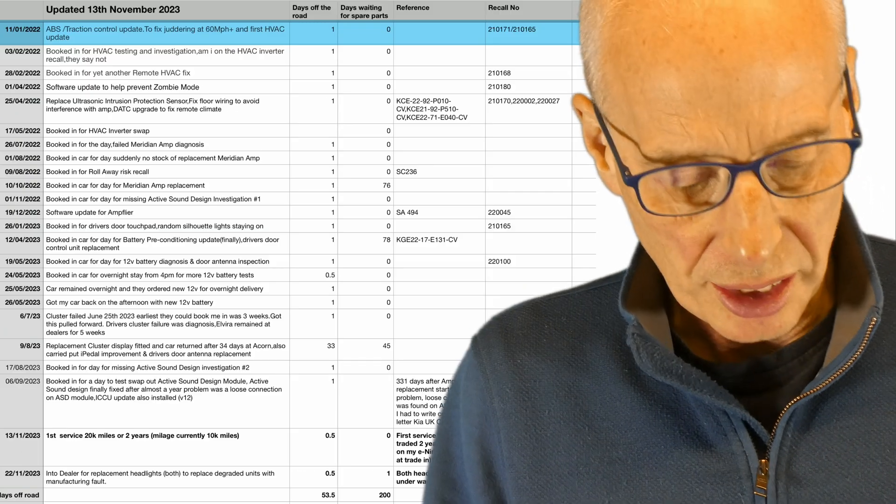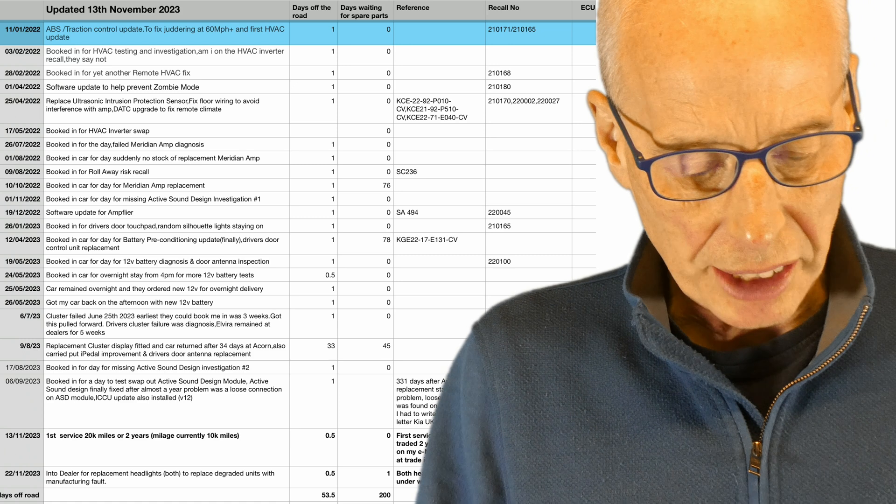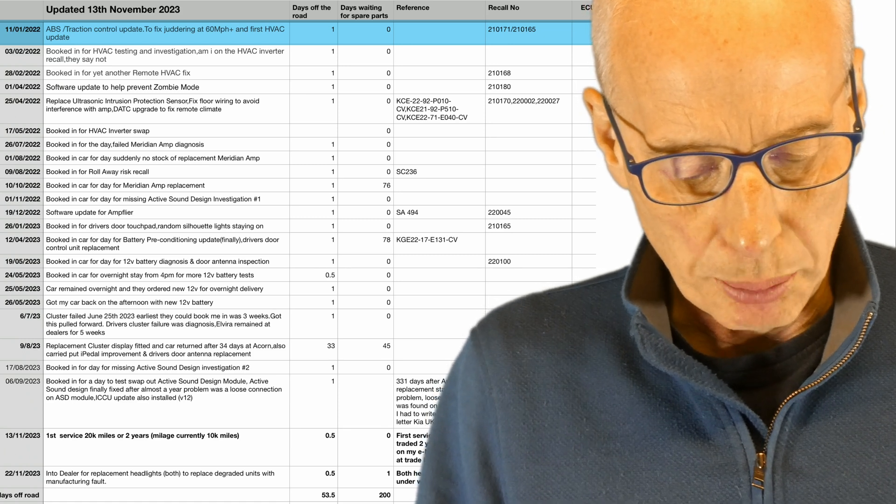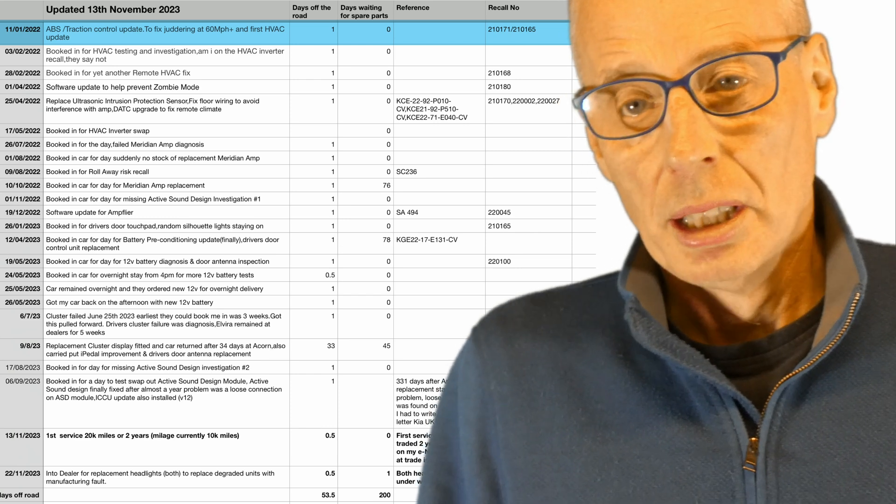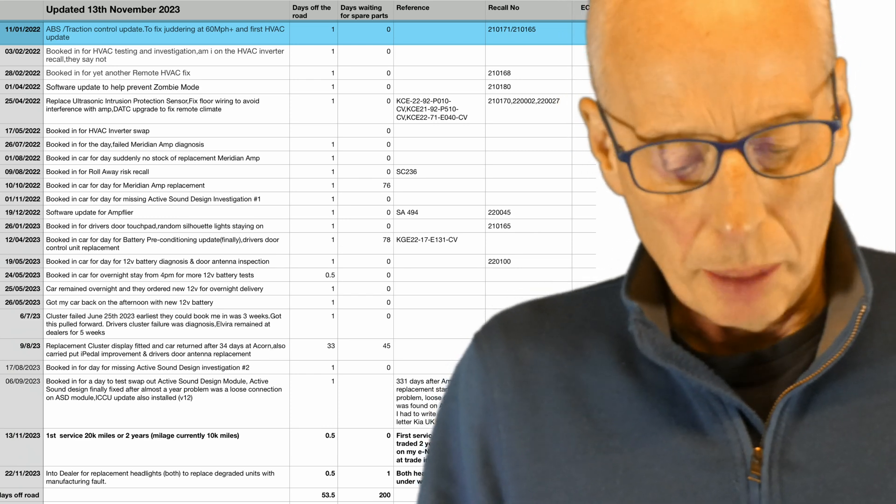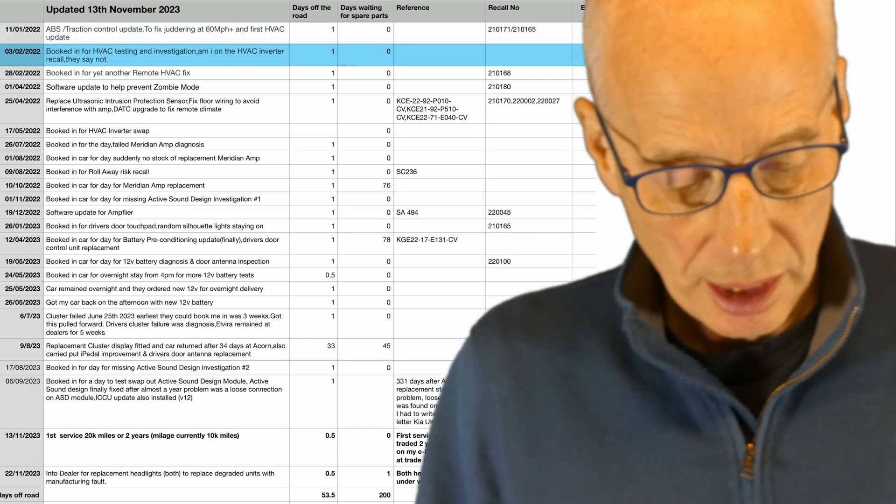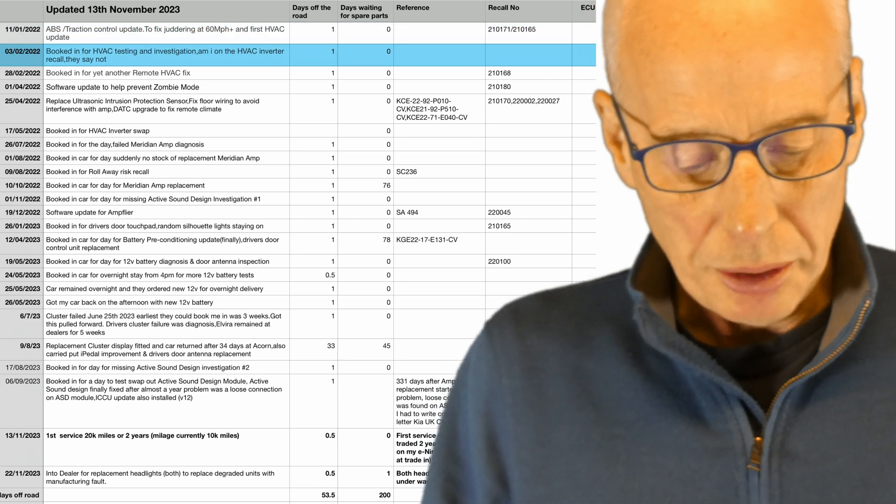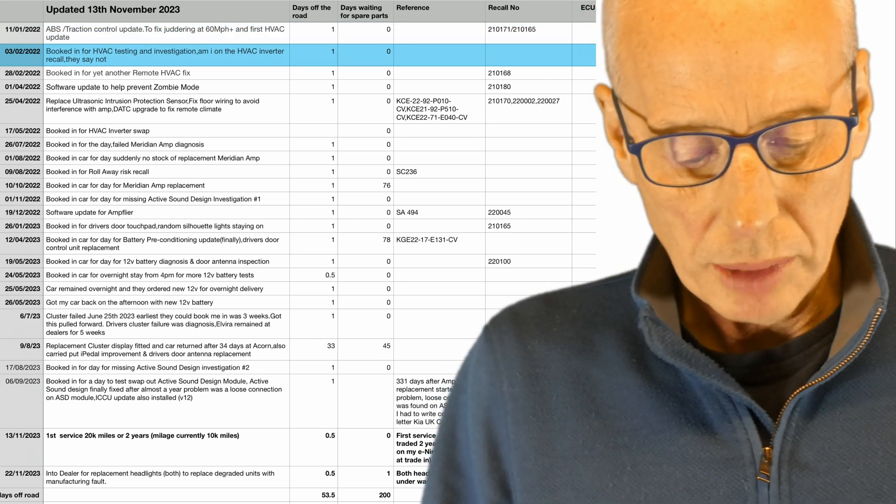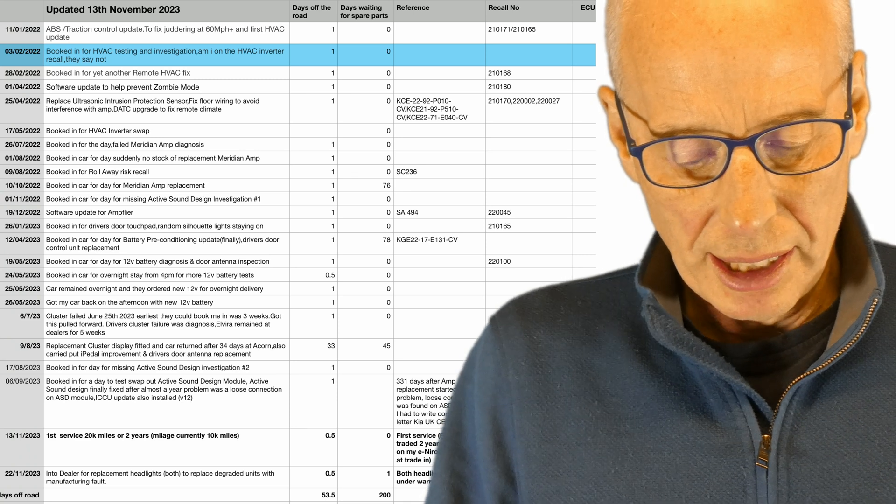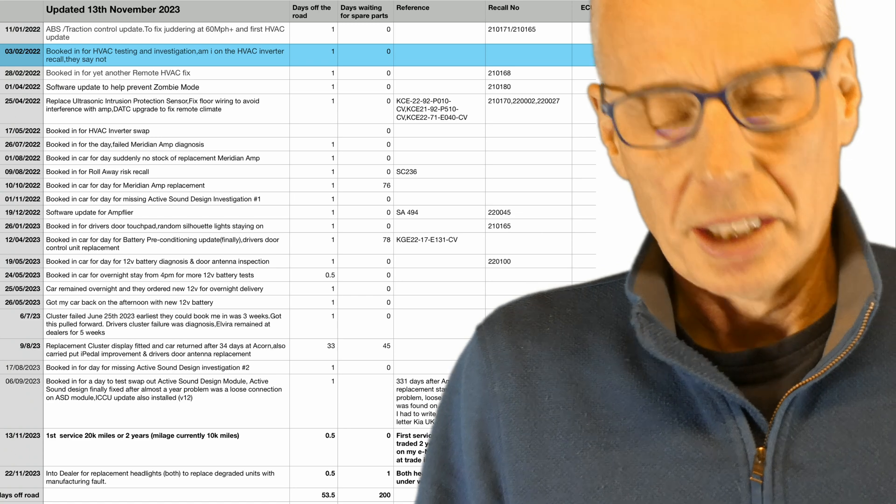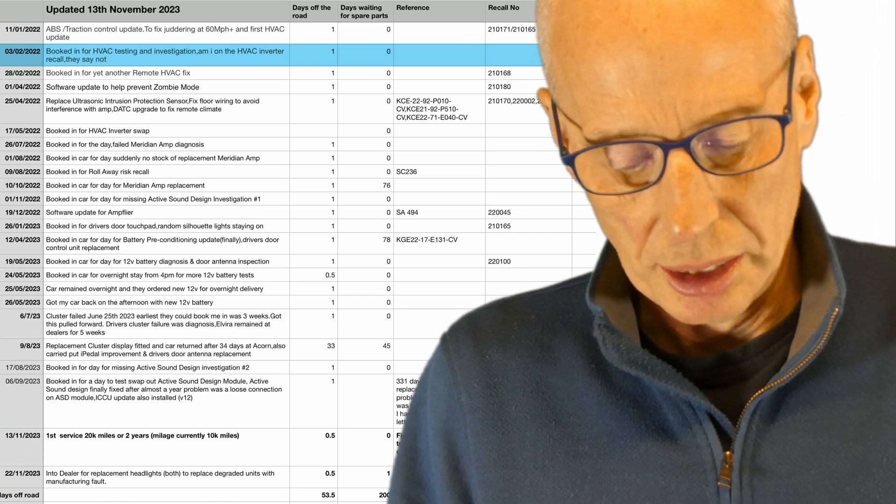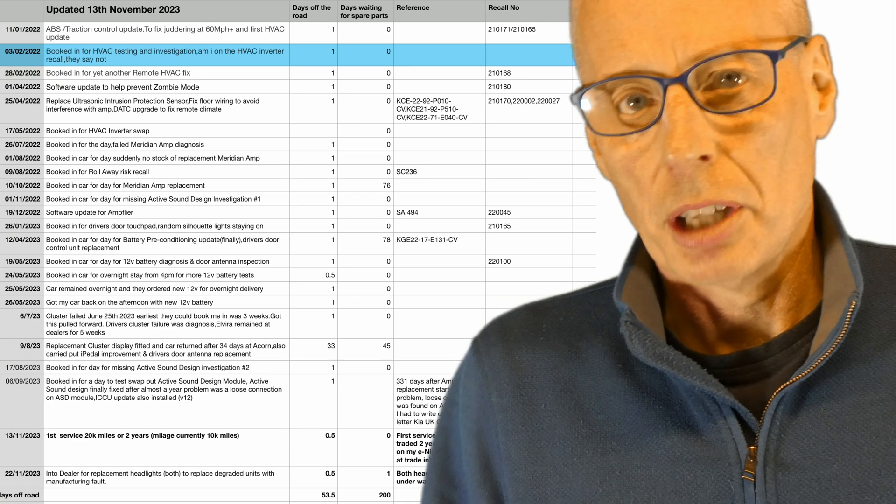The first update I got at the dealer was ABS traction control update to fix juddering at six miles an hour and the first climate control update that was some attempt to get the remote climate control working. The next one was in February '22.